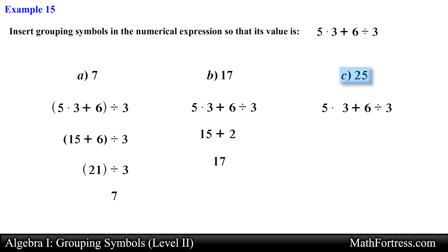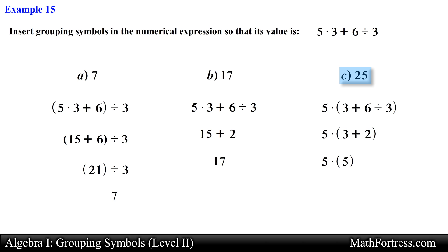For c), to get a final answer of 25, we group the expression (3 plus 6 divided by 3). Within the parentheses we take care of the division first: 6 divided by 3 equals 2, then add 3 to get 5. Finally 5 times 5 equals 25.